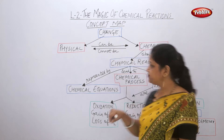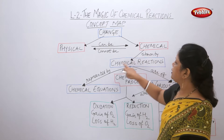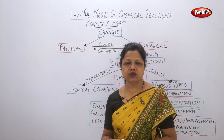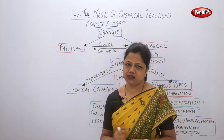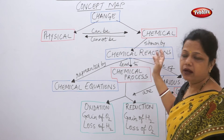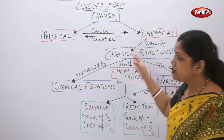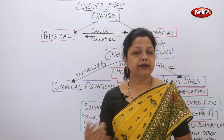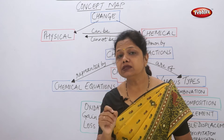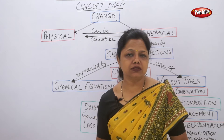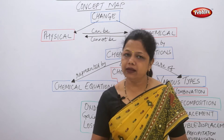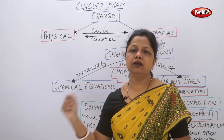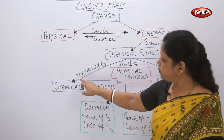Chemical change is shown by chemical reactions. When two or three things react together, that is called a chemical reaction. To show chemical reactions on paper, we use symbols and formulas. When we know the formulas of various compounds, mixtures, and elements, we can use those symbols and formulas to write chemical equations. So chemical reactions are represented by chemical equations.